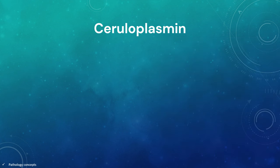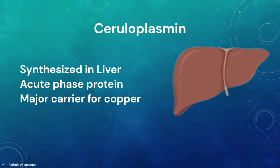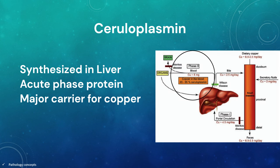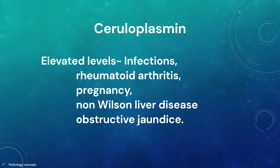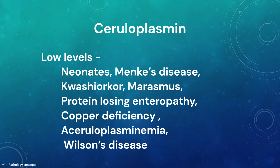Ceruloplasmin is synthesized in the liver and is an acute phase protein. It binds with copper and serves as a major carrier for copper in the blood. Normal plasma level of ceruloplasmin is 200 to 600 mg per litre. Elevated levels are often seen in infection, rheumatoid arthritis, pregnancy, non-Wilson liver disease and obstructive jaundice, because it is an acute phase protein. Low levels may be seen in neonates, Menkes disease, kwashiorkor, marasmus, protein losing enteropathy, copper deficiency, aceruloplasminemia and finally Wilson's disease.